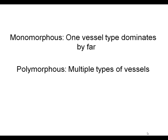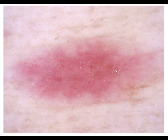There is also another important message. The vascular pattern may be monomorphous or polymorphous. In a monomorphous vascular pattern, one vessel type dominates by far, whereas in a polymorphous vascular pattern, we have multiple types of vessels. For example, you've already seen this. This is a monomorphous vascular pattern. It consists only of dotted vessels. It's important to note that one linear vessel does not make a pattern. A pattern has to cover a significant part of the lesion. This is a monomorphous vascular pattern that consists of dotted vessels only.